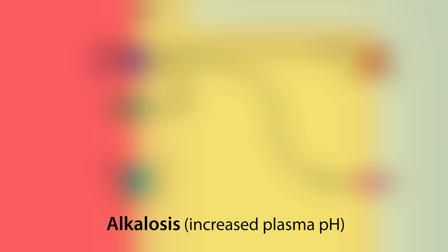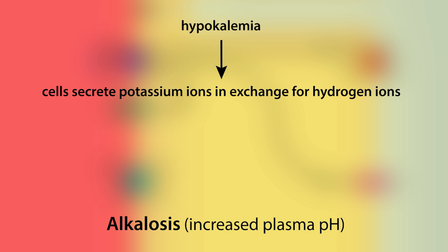The alkalosis, or increased plasma pH, is a compensatory mechanism due to the hypokalemia. To restore plasma potassium, cells secrete potassium ions in exchange for hydrogen ions, which then increases the plasma pH and results in alkalosis.